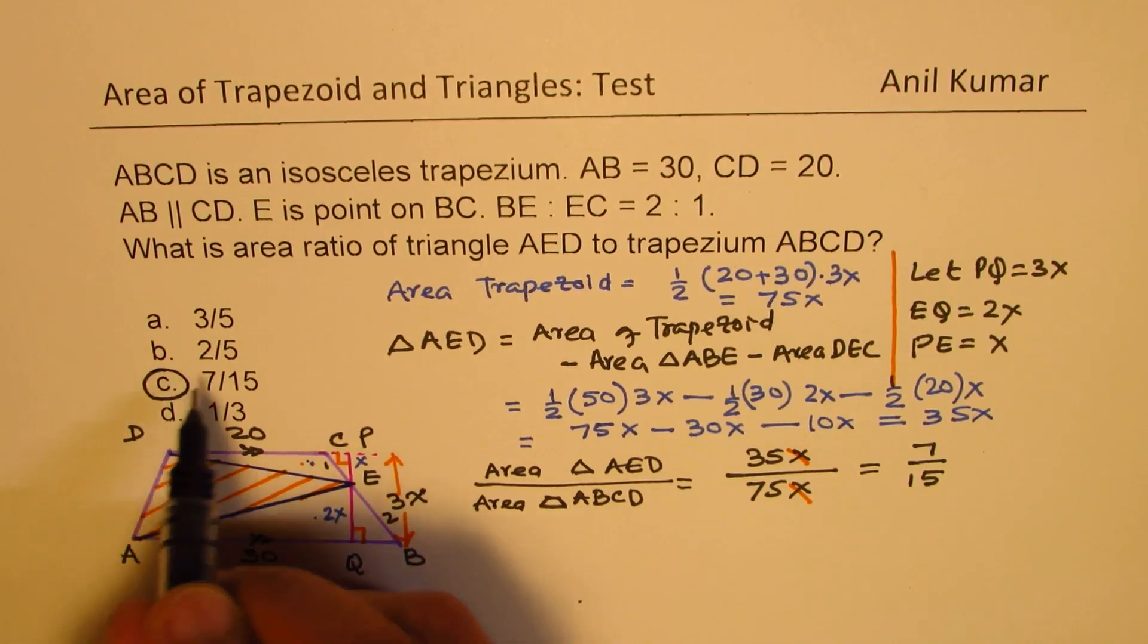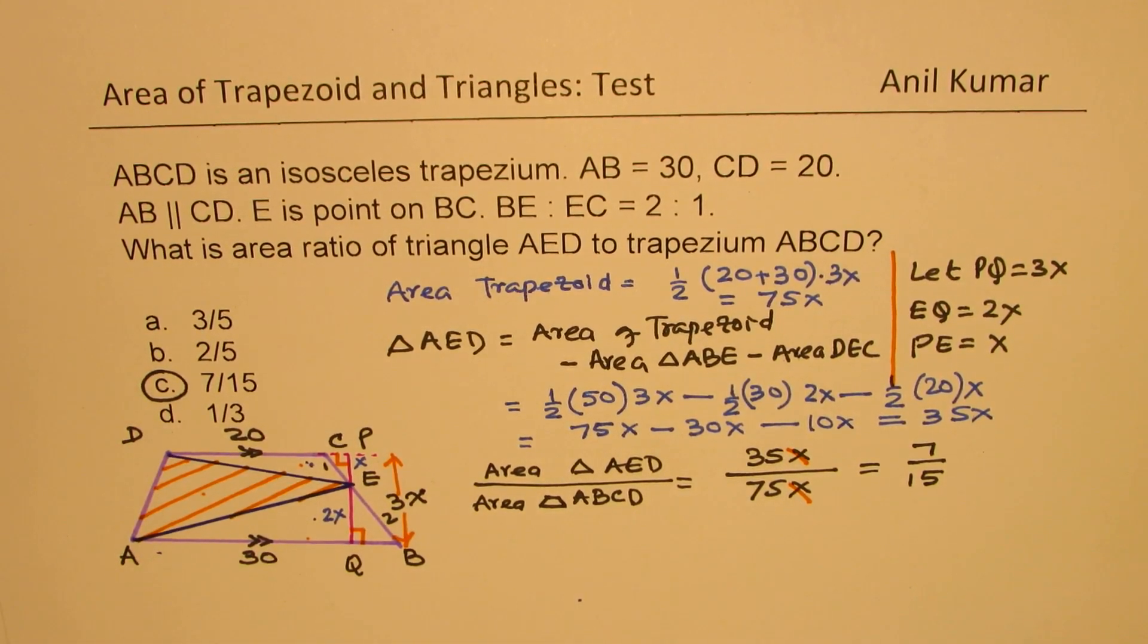So that is the ratio. So the answer is C, 7 over 15. So that is the ratio of the area of triangle to that of trapezoid. So I hope that makes sense.